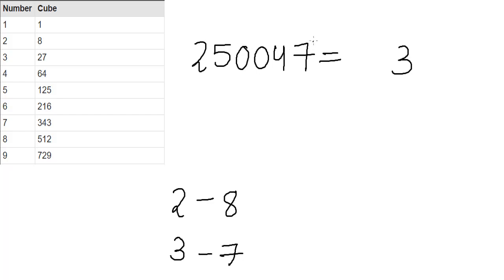After we do that we strike off the last 3 digits which is 047 and we just focus on the remaining number which is 250 here. Then we find a number which is lesser than 250 and is a perfect cube which is 216 here and the cube root of 216 is 6. So 63, that's our answer. As simple as that.